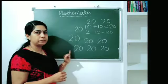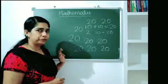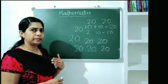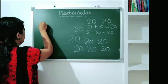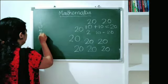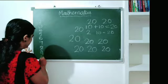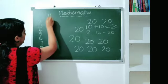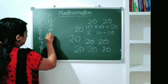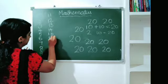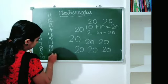How many tens is 20? Two-zero is 20. How many tens is 20? Counting: 10, 11, 12, 13, 14, 15, 16, 17, 18, 19, 20.